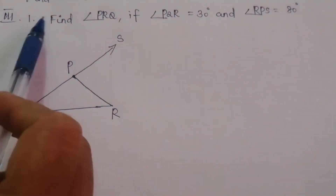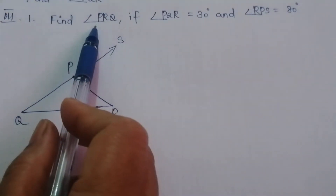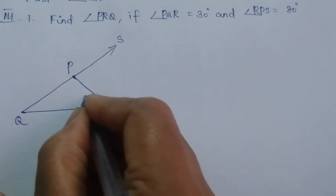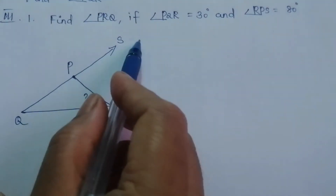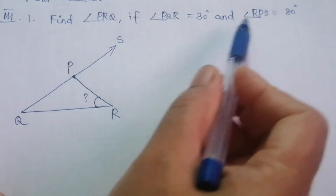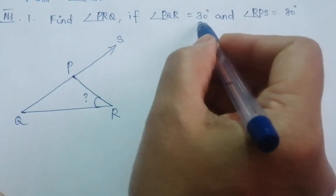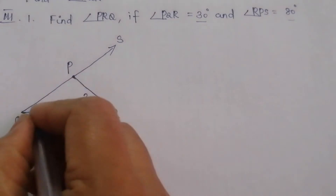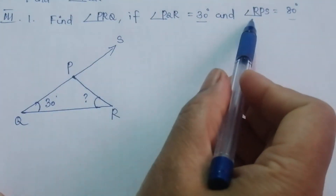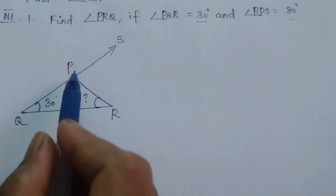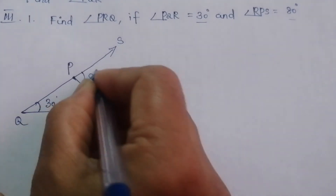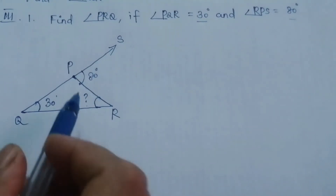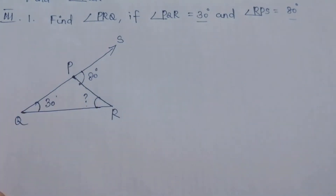Problem 3, question 1: find angle PRQ. We are given angle PQR = 30° and angle RPS = 80°. We mark these two angles on the triangle — angle PQR is 30° and angle RPS is 80°. Now we need to find angle PRQ, and here RPS = 80° is an exterior angle.